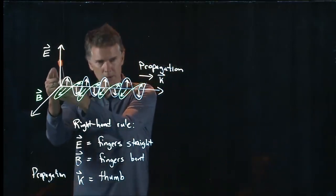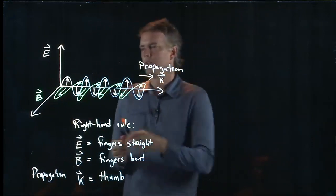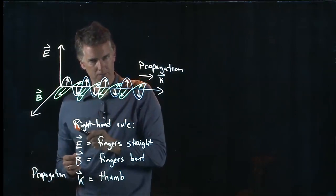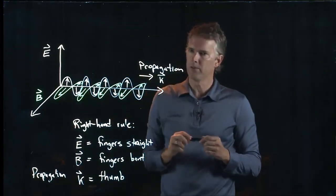So the relationship between E and B, those two angles, determine the direction of K. E is always orthogonal to B. And if you use your right hand rule, it will tell you the direction of K.